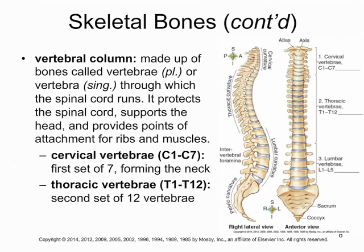The vertebral column is another important part. Each individual part is called a vertebra (singular) or vertebrae (plural). There is a hole in the center of each vertebra where the spinal cord runs through. The vertebral column is broken down into sections: the top section, toward your head and neck, is the cervical vertebrae — seven discs called C1 through C7 forming the neck. Underneath that are the thoracic vertebrae — 12 of them, T1 through T12 — where the ribs attach in the thoracic cavity.